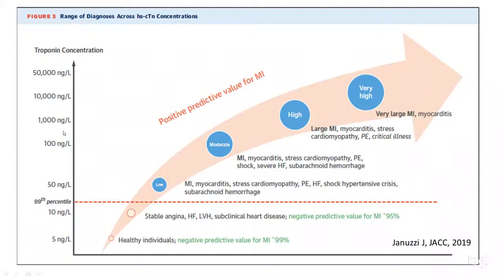A troponin of 1,000 today may roughly correlate to a troponin of 1 in prior assays, which we also saw related to other causes. A troponin of 10,000 today is very suggestive of a large MI.